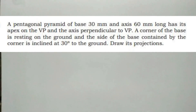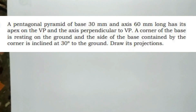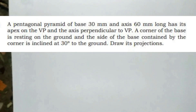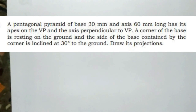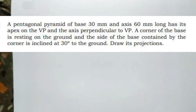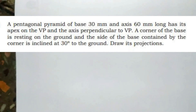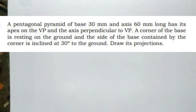Hello everyone. I will ask you the next question. A pentagonal pyramid with a base of 30 mm. The axis must be 60 mm long. It has its apex on the VP and the axis perpendicular to VP. A corner of the base is resting on the ground and the side of the base contained by the corner is inclined at 30 degrees to the ground. Draw its projections.